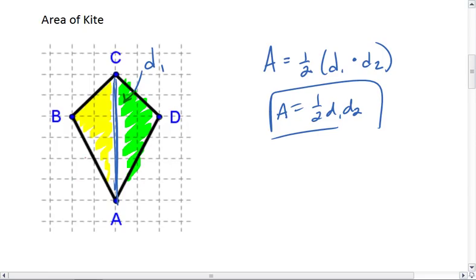The area of this yellow triangle is 1/2 the base, which is D1, times the height, which is actually the left side of D2, so we'll call that D2L. The yellow area is 1/2 D1 times D2L.